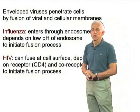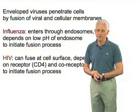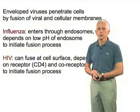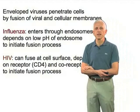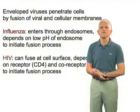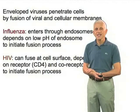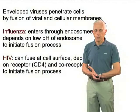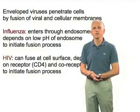Different viruses have different triggers, or sensors if you wish, to initiate the fusion process. Influenza, a virus which enters through endosomes, depends on the low pH of the endosome to initiate fusion. Viruses such as HIV can fuse at the cell surface, and they depend on sensing the receptor, which triggers conformational changes, and in the case of HIV, a co-receptor as well.